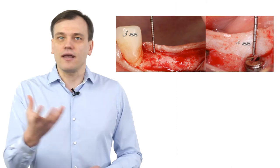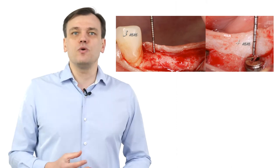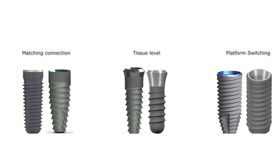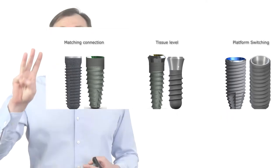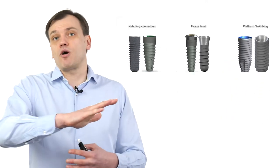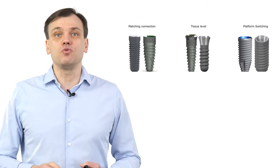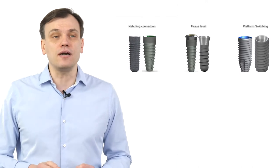Let's switch back to the implant design session and discuss how implants are made, now in the light of tissue thickness. We'll discuss three major types of implants which actually probably cover 99% of all implants sold on the market.